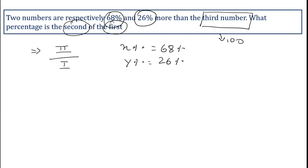Since the two numbers are respectively 68% and 26% more than the third number, use the formula: (100 + y) / (100 + x) × 100%. Since we know the values of x and y, we put them in the formula.